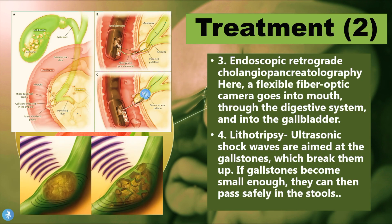We can also treat the patient with ERCP. A flexible fiber-optic tube goes into the mouth, through the digestive system, and into the gallbladder. We can see stones within the gallbladder and a stone in the common bile duct. The area where the bile duct meets the duodenum is called the ampulla of Vater, and the stone there can be removed via ERCP — a wire-guided sphincterotome is inserted, a balloon is inflated, and it pulls downward to remove the gallstone into the duodenum so it can be passed out through the feces.